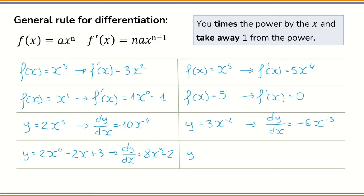One more example. y equals 6x to the power of 5 minus 3x to the power of 3 minus x. dy/dx equals 5 times 6, which is 30x to the power of 4, minus 3 times 3, which is 9x to the power of 2, minus 1.